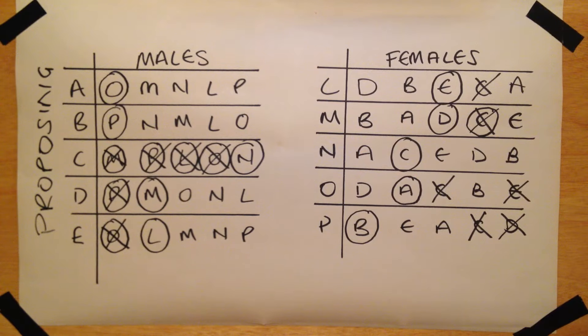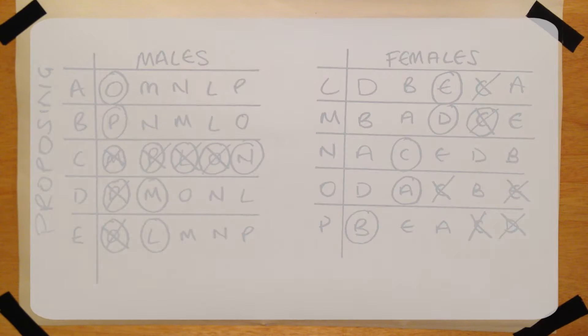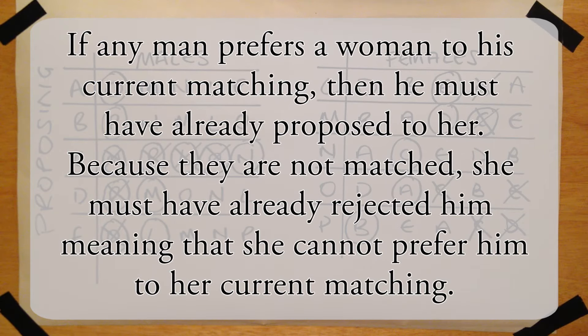We know this because if a man preferred a woman to his current match, he would already have proposed to her, and she would have had to reject him, meaning that she cannot prefer him to her current match.